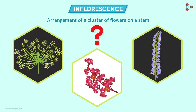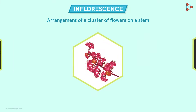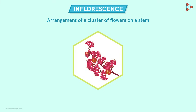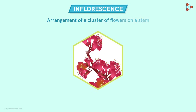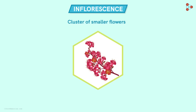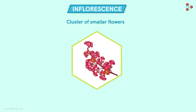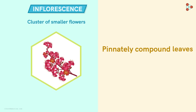What exactly is inflorescence? We would prefer taking an example. Let's take this same flower. As we can see here, there is no single flower at the apex of the stem. Rather, small flowers cluster and form a complete structure. Although this is not the perfect analogy, but just to understand, we can relate this to the pinnately compound leaves.